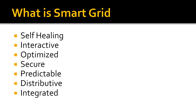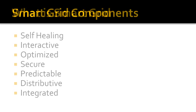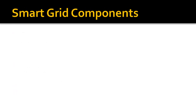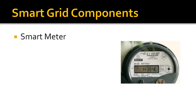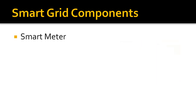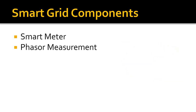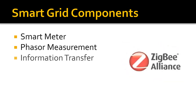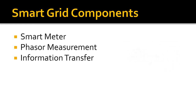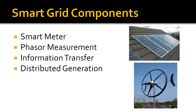Implementing the system requires some replacement of legacy equipment, leading to the utilization of new protocols. Here are just some of the major components needed to implement smart grid: smart meter, phasor measurement unit, information transfer, and distributed generation.